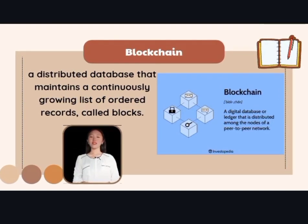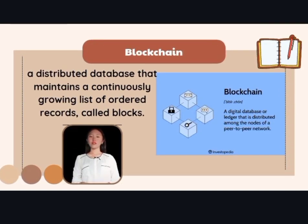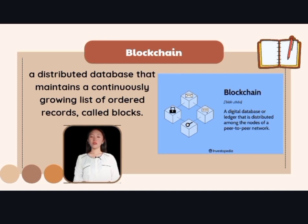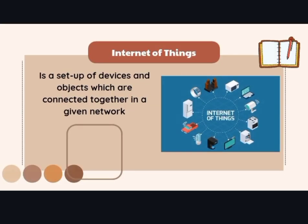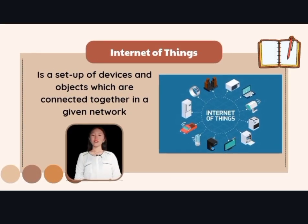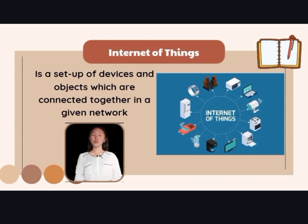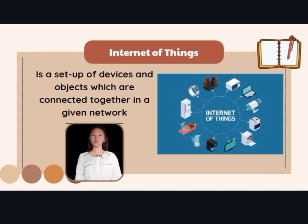Blockchain is a distributed database that maintains a continuously growing list of ordered records called blocks. The Internet of Things is a setup of devices and objects which are connected together in a given network.